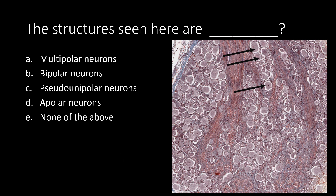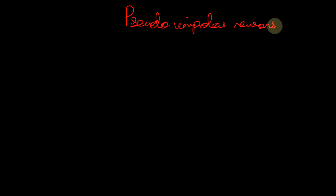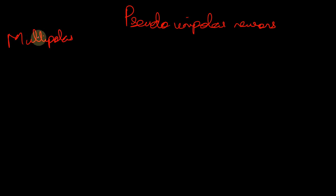Alright, let us look at the answer. The answer here is pseudo-unipolar neurons — pseudo-unipolar neurons, in contrast to multipolar and bipolar.